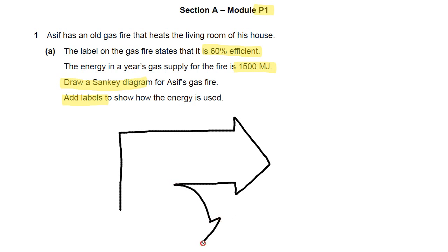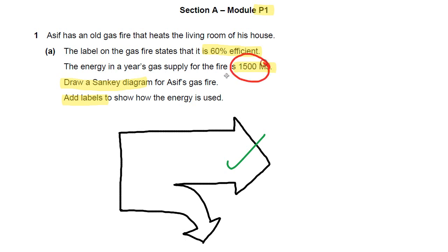The second arrow, once labelled, is going to be the waste arrow. So a quick sketch like that, and if you've sketched it like that you've already got yourself a mark. For the labels, let's put some of this data on. I could say this is 100% of the input, or it's probably better to say 1500 megajoules input.